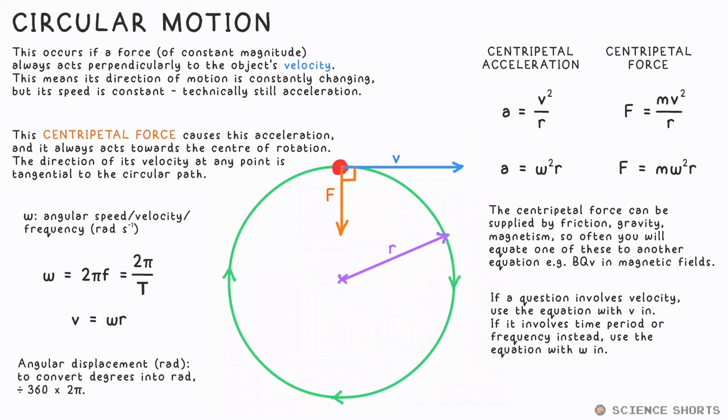Similar to angular velocity, angular displacement is just how many radians an object has turned through. You know from waves to turn degrees into radians, we divide by 360 to turn into whole circles or whole cycles, then multiply by 2π to turn it into radians.